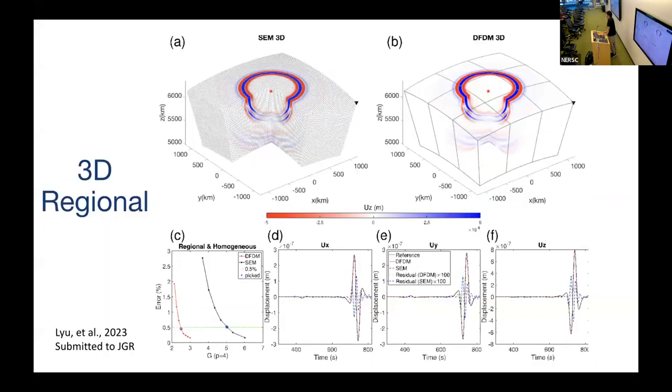Now let's look at the 3D case. We purposely placed a station on the corner to check whether we can achieve accurate surface wave simulation, because surface waves have much larger amplitude than S-waves.